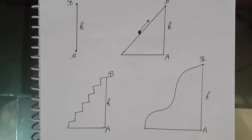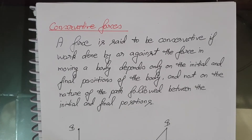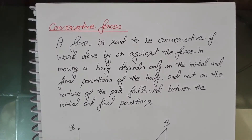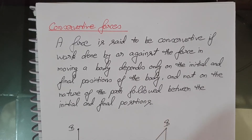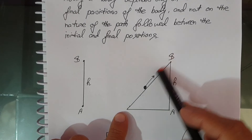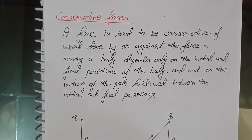An important point about conservative forces: work done by or against a conservative force in moving through any closed path — where the final position coincides with the initial position — is zero. So if you take a body from point A to point B and back, the total work done will always be zero in conservative forces.